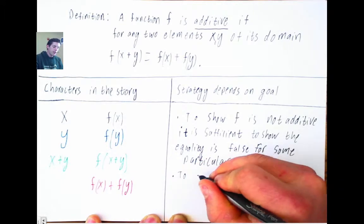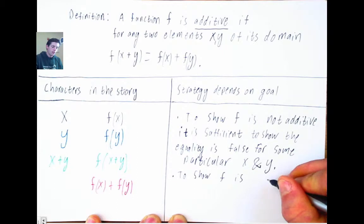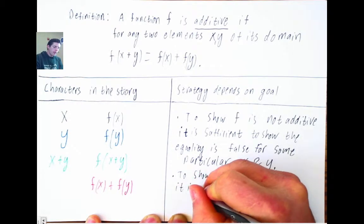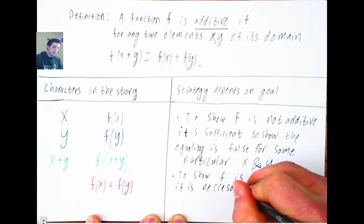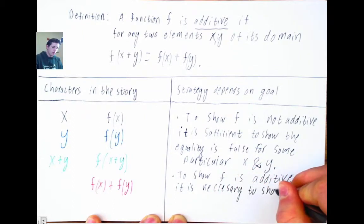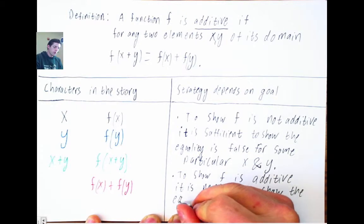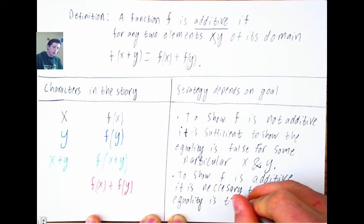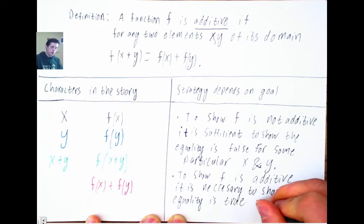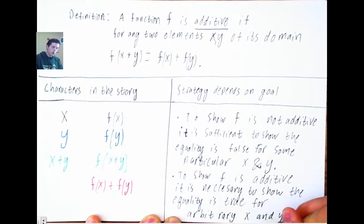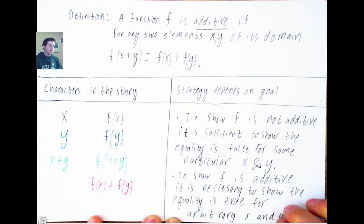To show that a function is linear—sorry, is additive, which is half of linearity—it's necessary to show the equality is true for all x and y. And this language takes some getting used to, but I'm going to use the word arbitrary and give all these things meaning in just a second here.